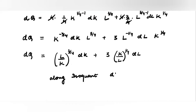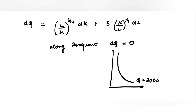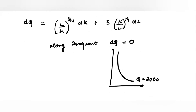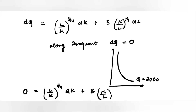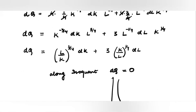Along an isoquant, dq is 0 — there is no change in output along any isoquant. You hold output constant at any level; in this case we are holding output constant at the level of 2000. So because we hold output constant, I will put dq equal to 0 and solve.